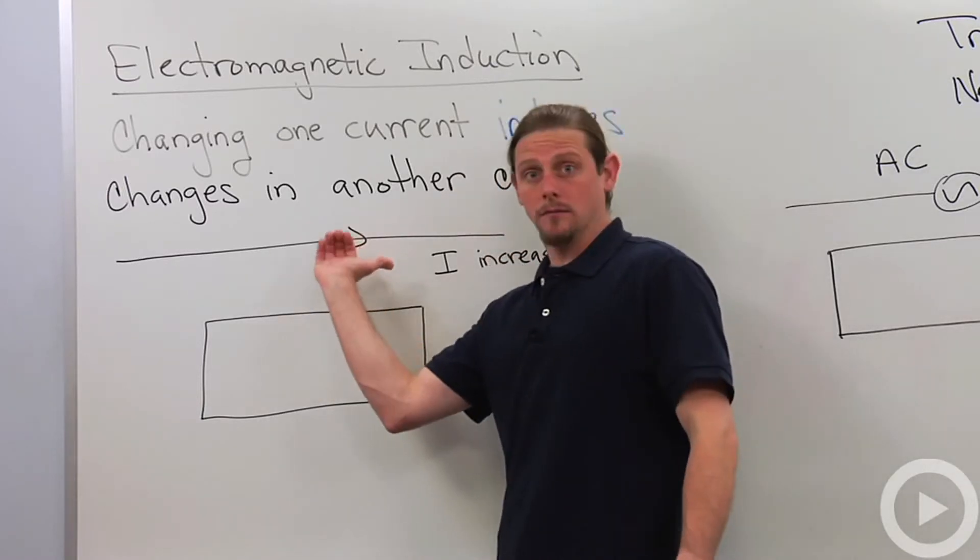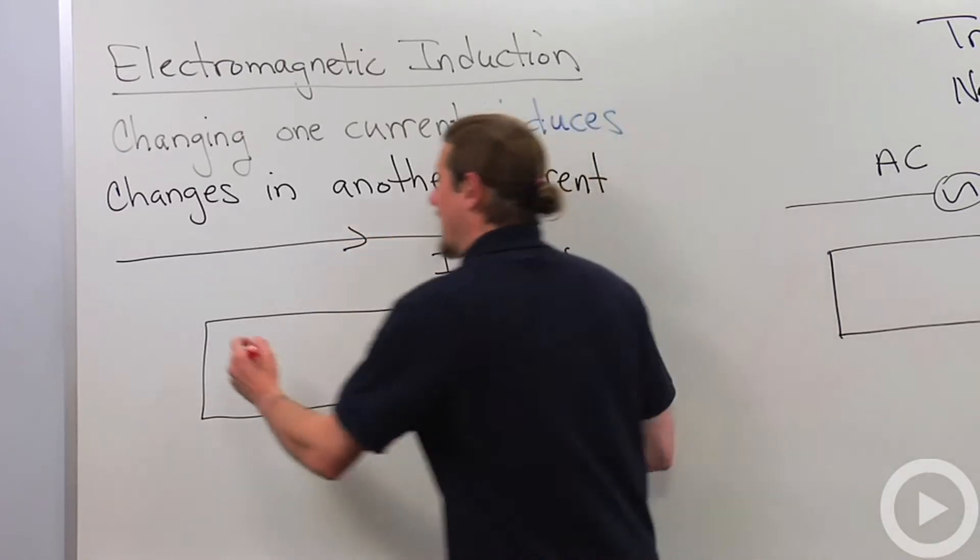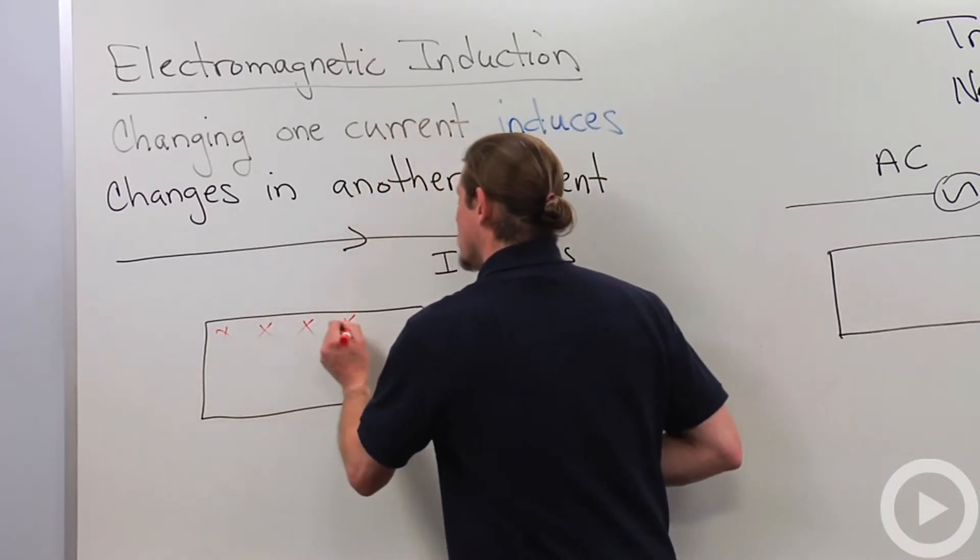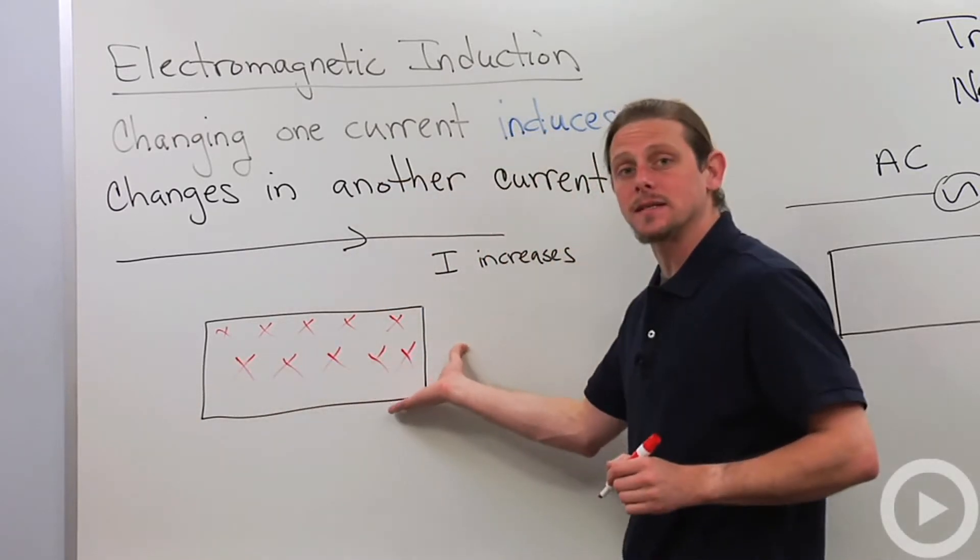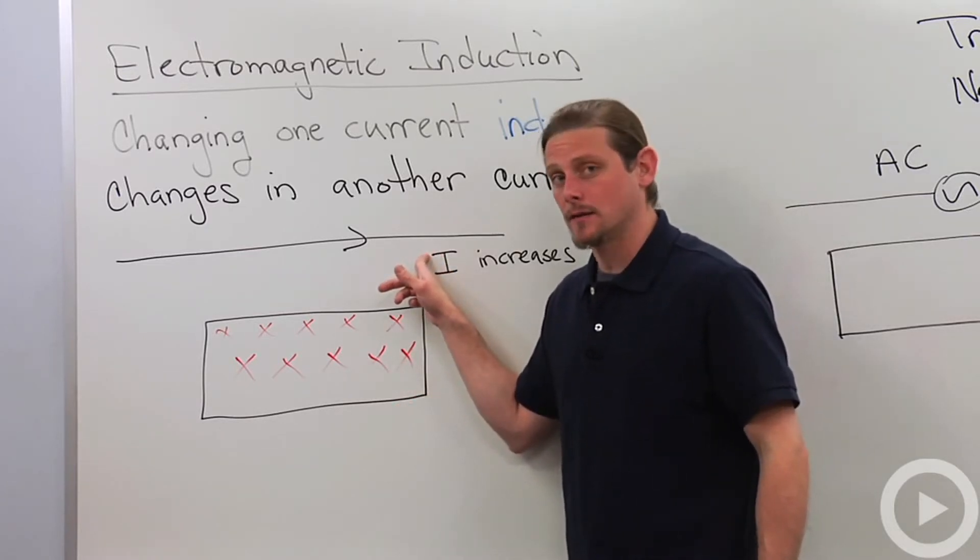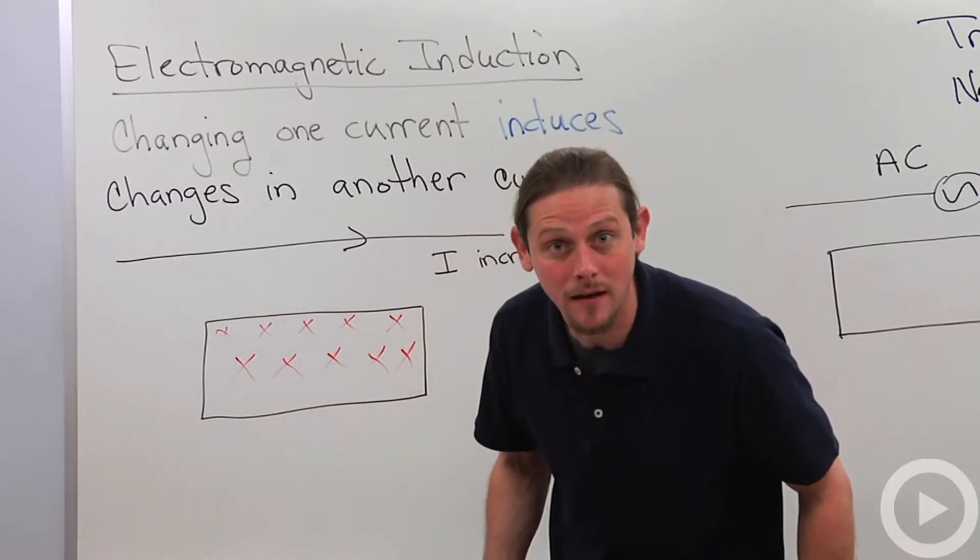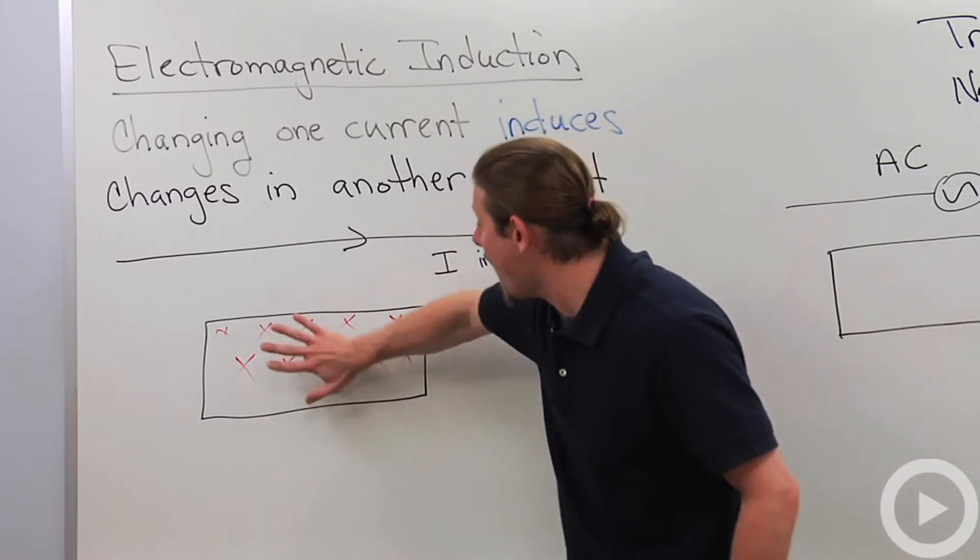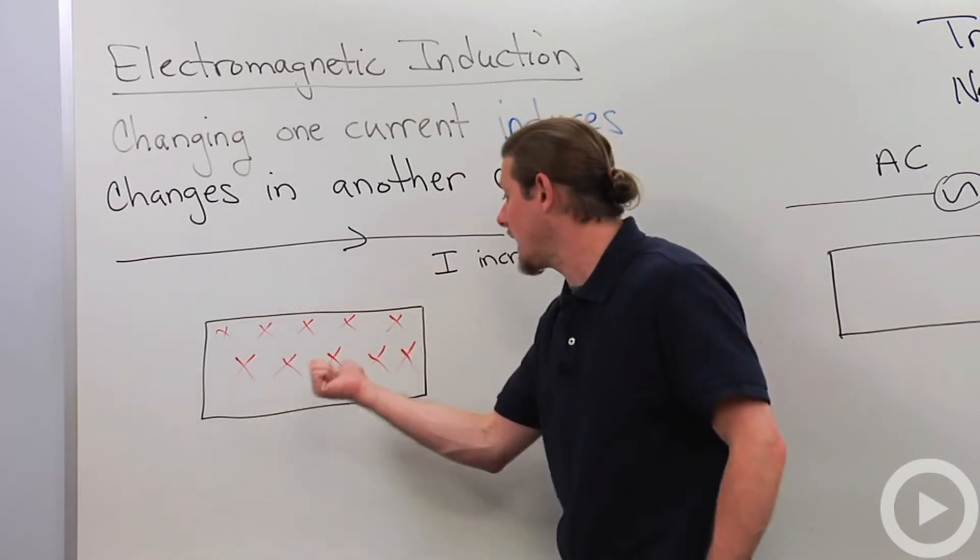This current, since it's going in this direction, is associated with a magnetic field that's going into the page inside this second circuit loop. This current is increasing. That means that the value of this magnetic field is increasing. That means that the magnetic flux through this loop is increasing into the board.